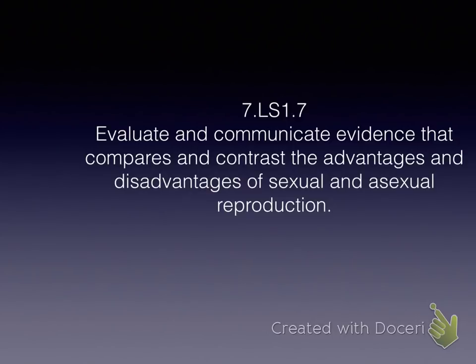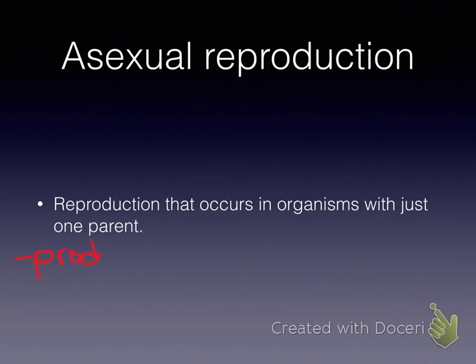At the top of your paper, you have two spots for definitions, so we're going to define some terms first. Asexual reproduction is the reproduction that occurs in organisms with just one parent. Write that down. Also include: produces genetically identical offspring — in science class, we call those daughter cells.